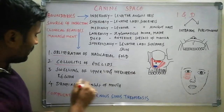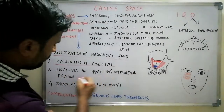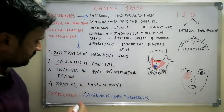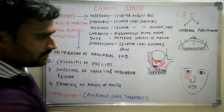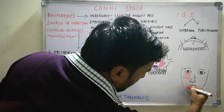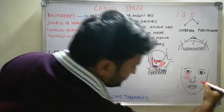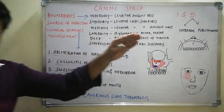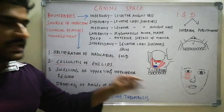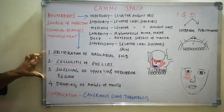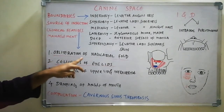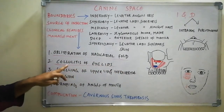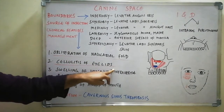Cellulitis mostly involves the lower eyelid and may also involve the upper eyelid, resulting in closure of the eye. The third feature is swelling of the upper lip and infraorbital region, and the fourth is drooping of the angle of the mouth — one side of the angle is lowered. If you write these four clinical features that is enough. Do not miss obliteration of the nasolabial fold and cellulitis of eyelids.